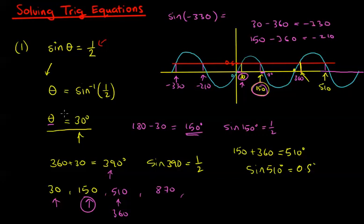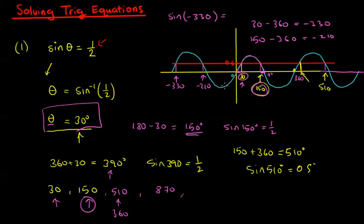The calculator only gives you one particular answer — it gives us 30 — but you can work out as many as you want. Just by using the sine wave and using its symmetry, those humps are symmetrical, and then adding 360 to these gives us multiple answers.